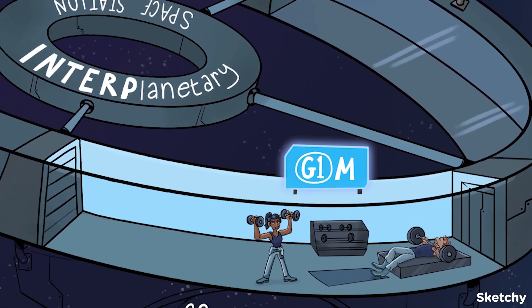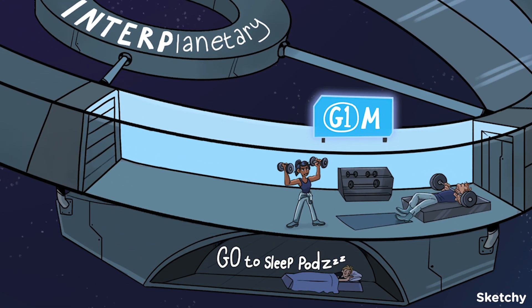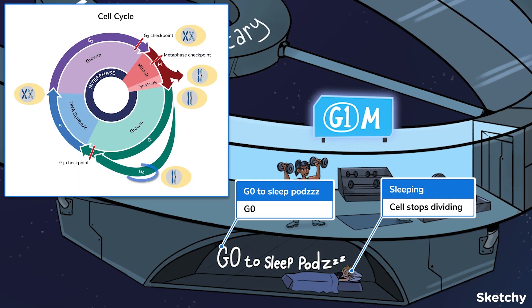The cell has completed a full cycle, but you're probably wondering what happens to cells that don't normally divide. From G1, they can enter G0, a dormant phase in which cells are metabolically active but slow down protein synthesis, don't grow, duplicate, or divide. To show that, we drew a go-to-sleep pod for our astronauts.